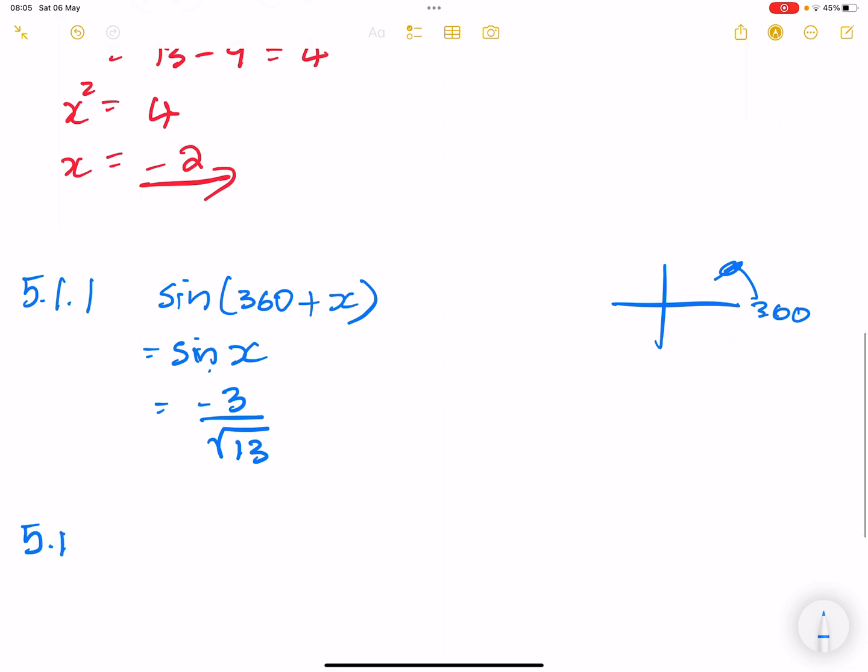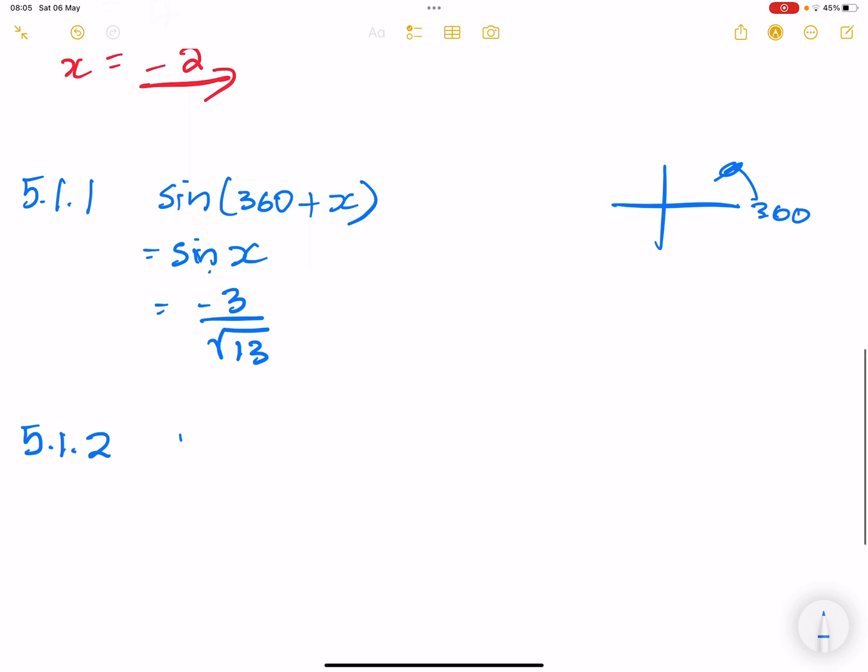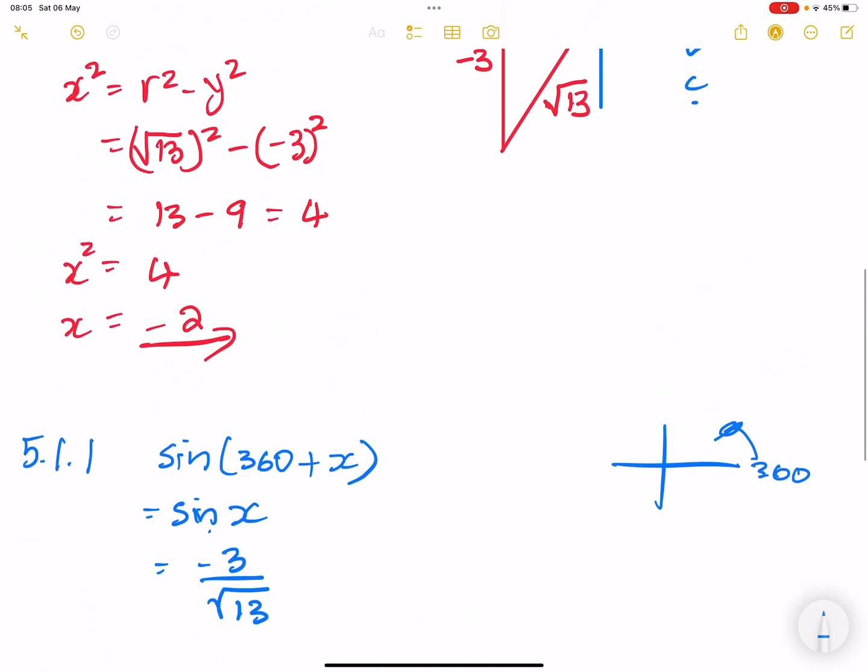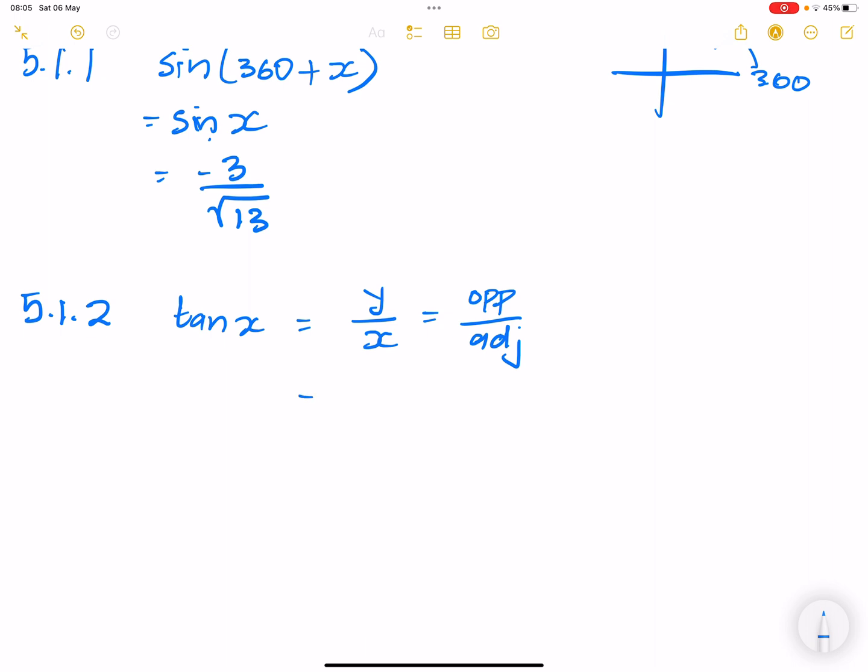So let's go on to 5.1.2. They say we need to find tan(x). So tan(x), we know this is equal to y/x, or we can say opposite over adjacent. Our y value is -3 and our x value is -2. So this will be -3 divided by -2. We can actually say this is 3/2.